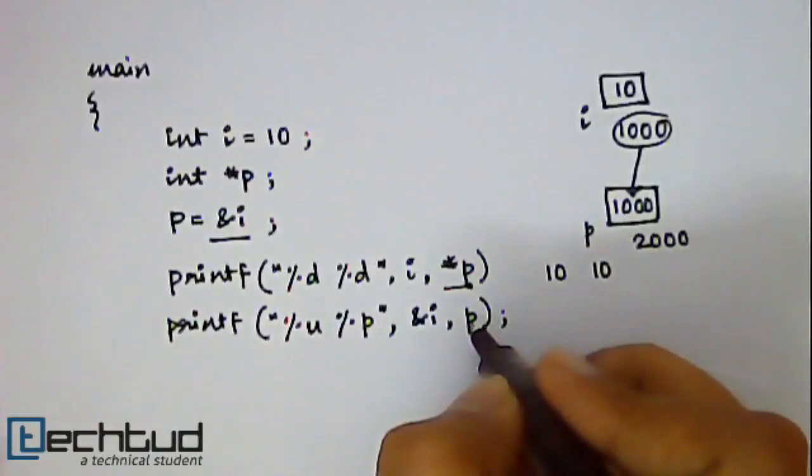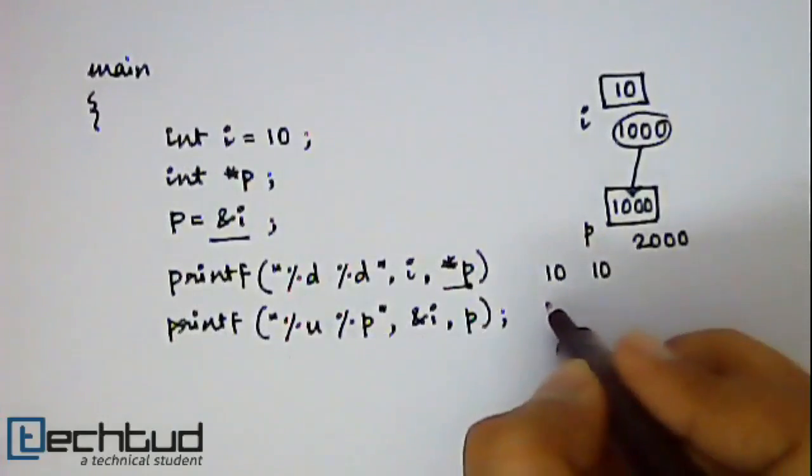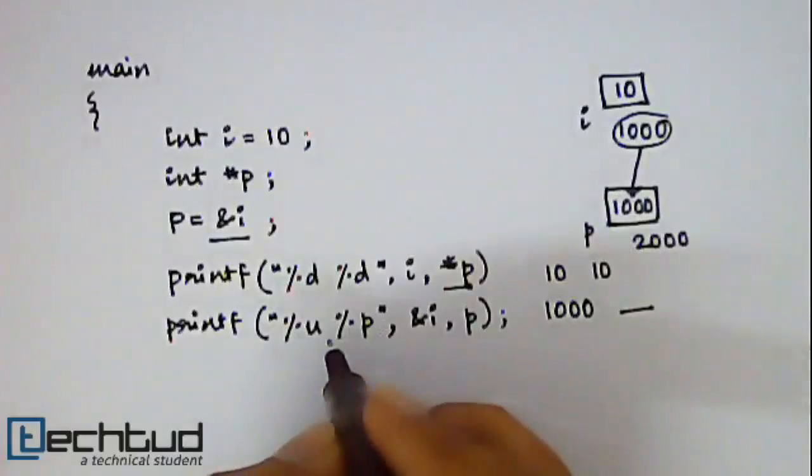So p contains what? 1000 and ampersand i also contains 1000. So first 1000 will be printed and then the hexadecimal value of 1000 will be printed.